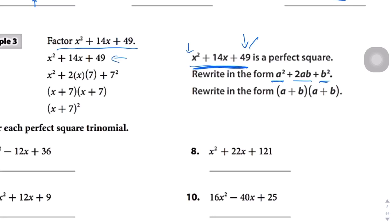Looking at the actual problem: x squared plus 14x plus 49. You can break x squared down — the square root of x squared is just x, and the square root of 49 is 7. So x becomes our a, and 7 becomes our b. We plug those in: a goes here and here, b goes here and here. Since we have two pluses, we get x plus 7 times x plus 7, which becomes x plus 7 squared.